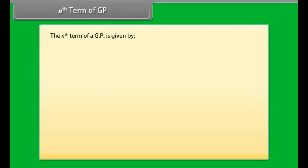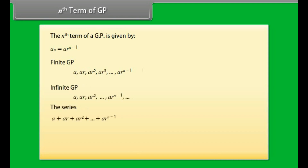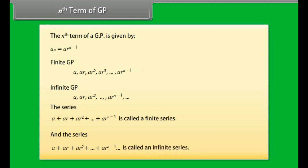The nth term of a GP is given by Aₙ = A × Rⁿ⁻¹. A finite GP series is: A + AR + AR² + ... + ARⁿ⁻¹. This is called a finite series. The series A + AR + AR² + ... continuing infinitely is called an infinite series.